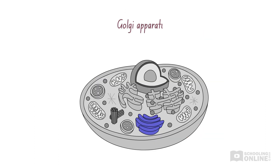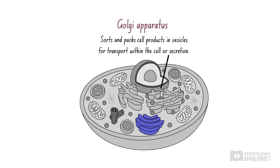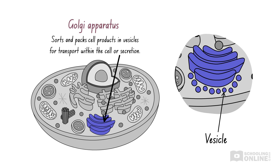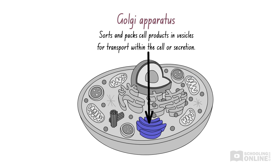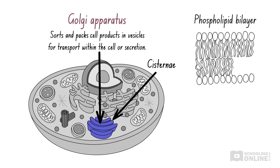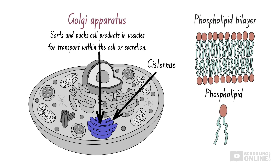The Golgi apparatus is also found in animal cells. It is an organelle that sorts and packs cell products, such as lipids and proteins, so they can be transported within the cell or secreted out of the cell. Each cell product is packaged in a vesicle, which is a small sac enclosed by a membrane. Like the endoplasmic reticulum, the Golgi apparatus forms a network of flattened membranes, or cisternae. However, they are not connected and lack ribosomes. These cisternae are composed of single phospholipid bilayers, which consist of two layers of phospholipid molecules.